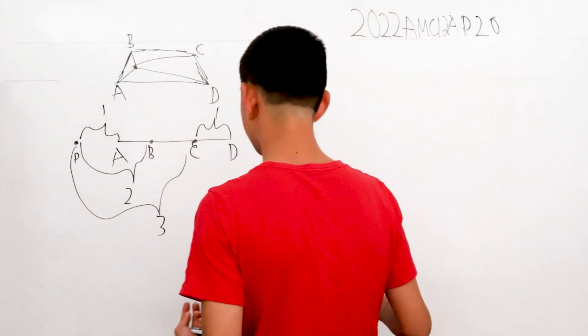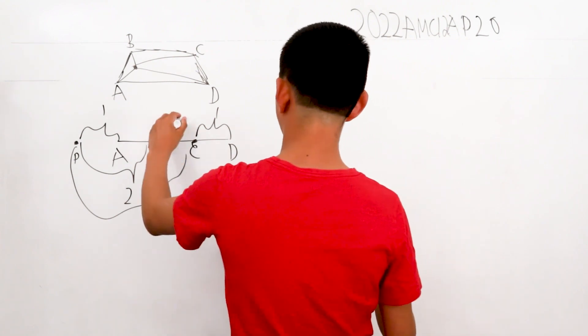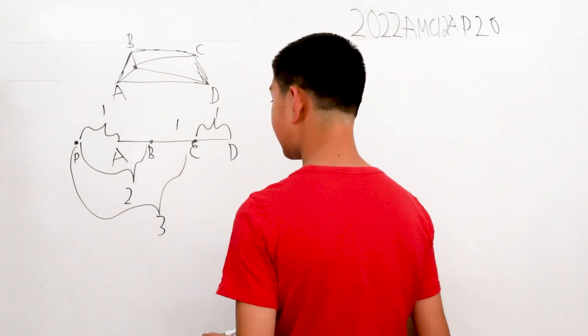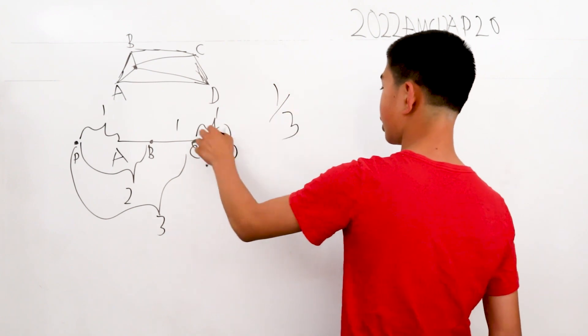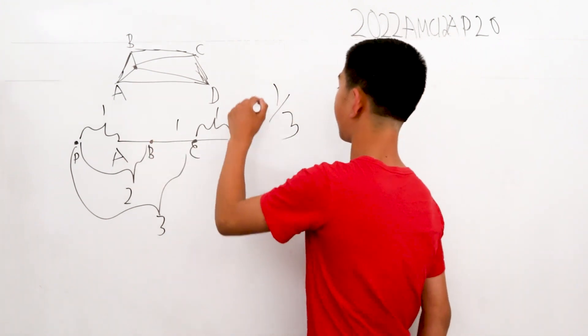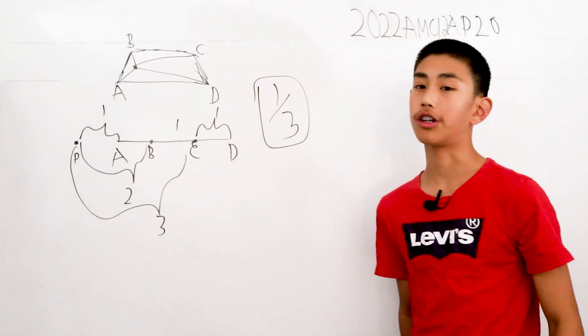Now we want BC over AD. That's just 1/3 since each of these segments all have a length of 1. So 1/3 is our answer.